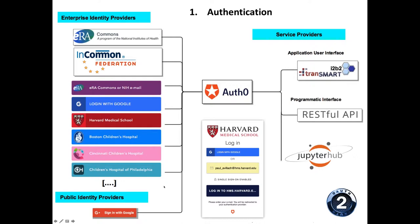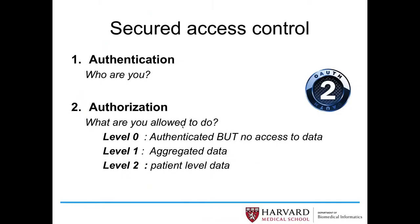The first key point, because we have patient data, is to make sure we respect authentication and authorization. We use a centralized federated authentication mechanism using OAuth2 to make sure we do not store any passwords. We use enterprise identity providers via professional emails, and for projects involving parents, they can use public identity providers like Google or Facebook to log in. Based on this, they can access the platform — either the i2b2tranSMART user interface, the RESTful API, or JupyterHub for reproducible science.